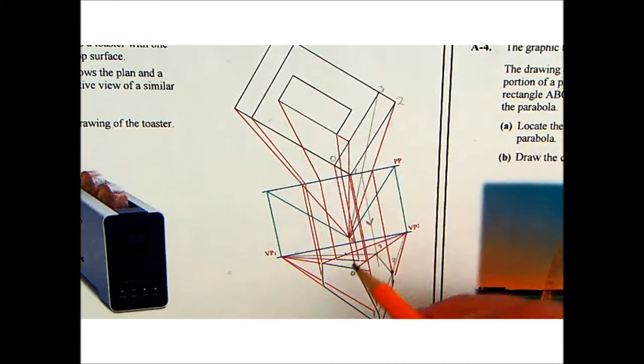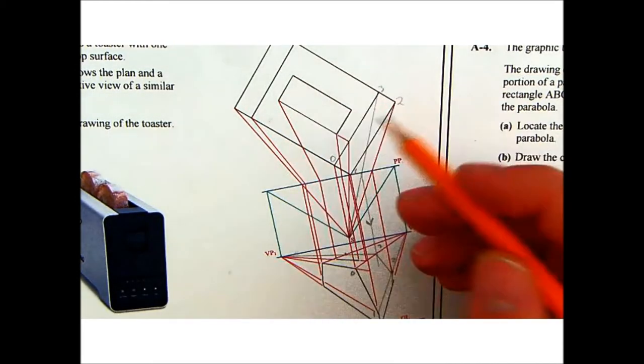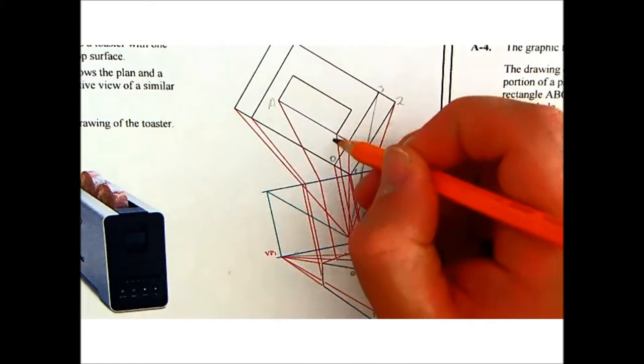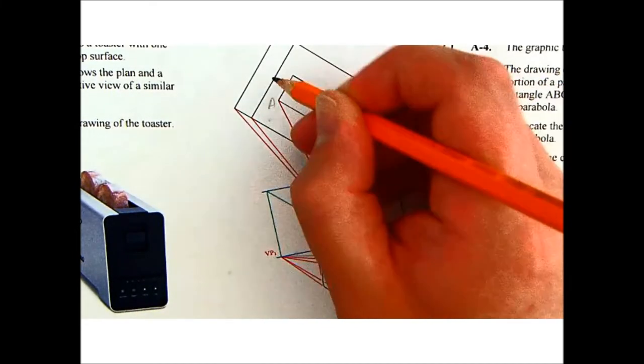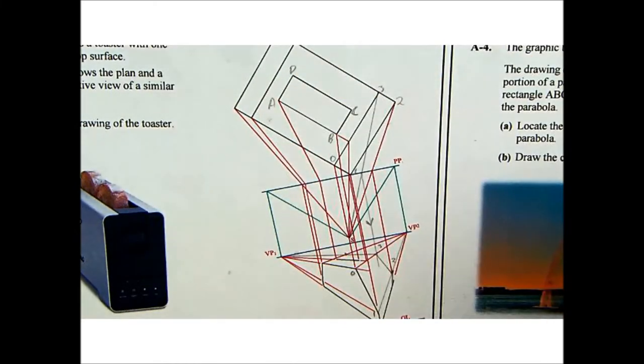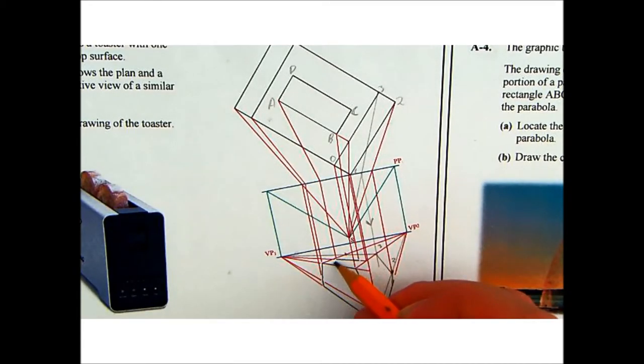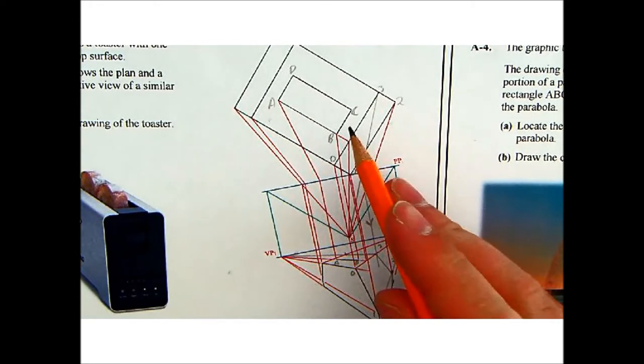Now after that, we have to do this rectangular slot at the top. So if we label these points A, B, C and D. We already have A, we already have B. Now we have to find C and D.